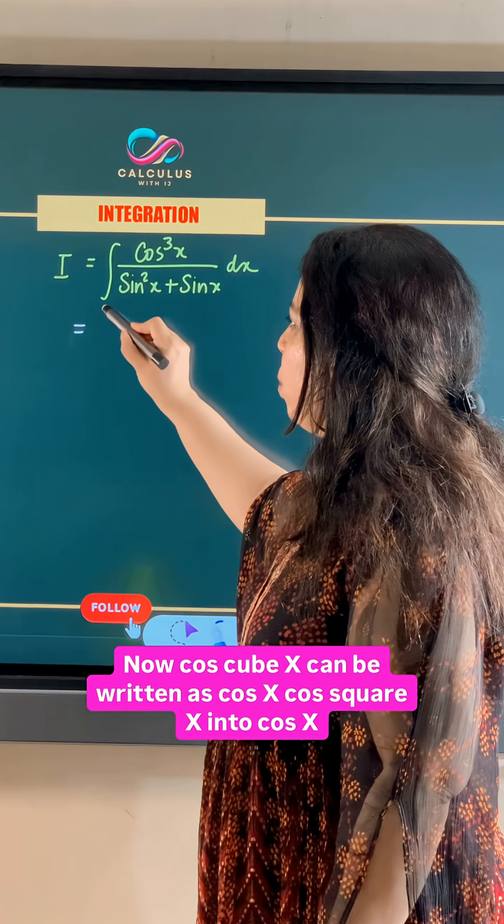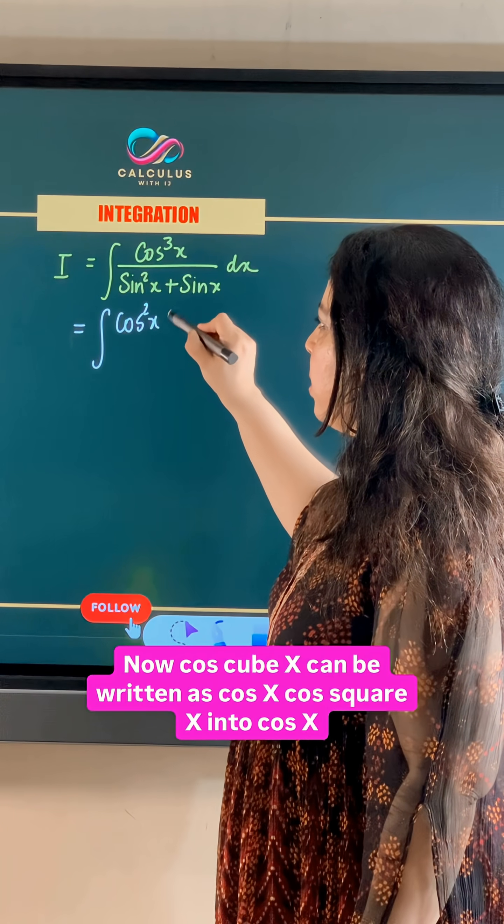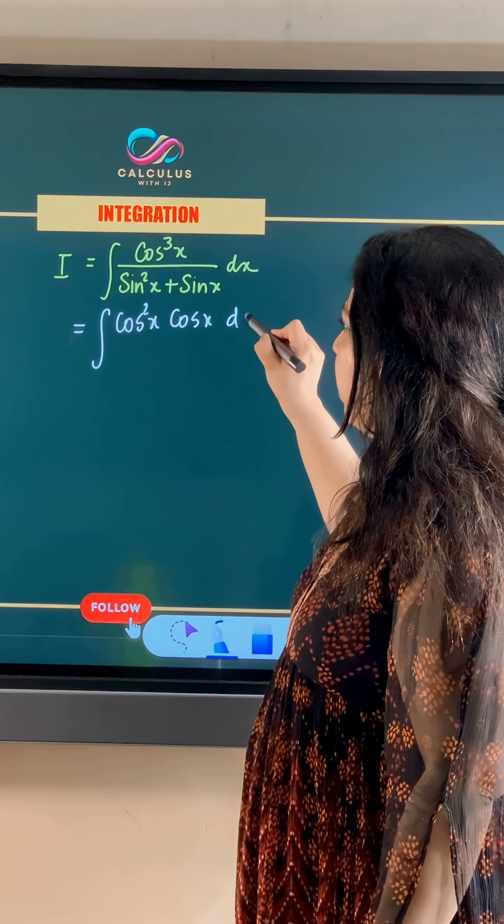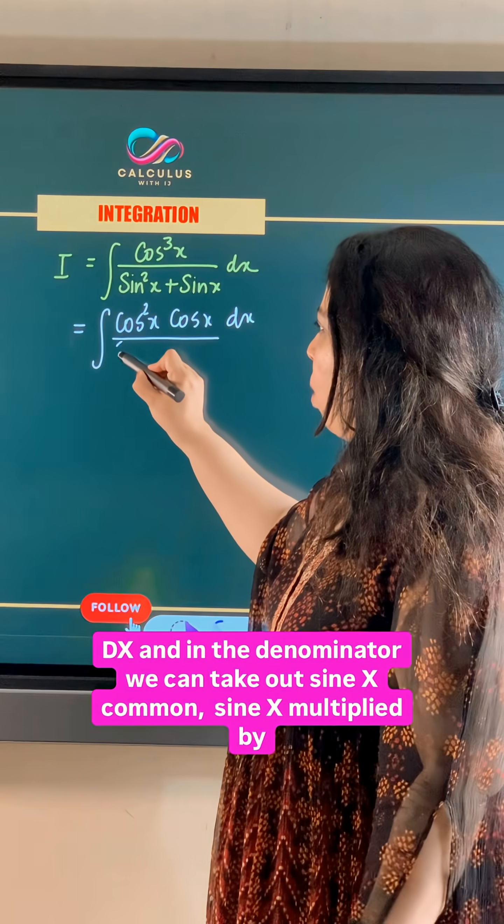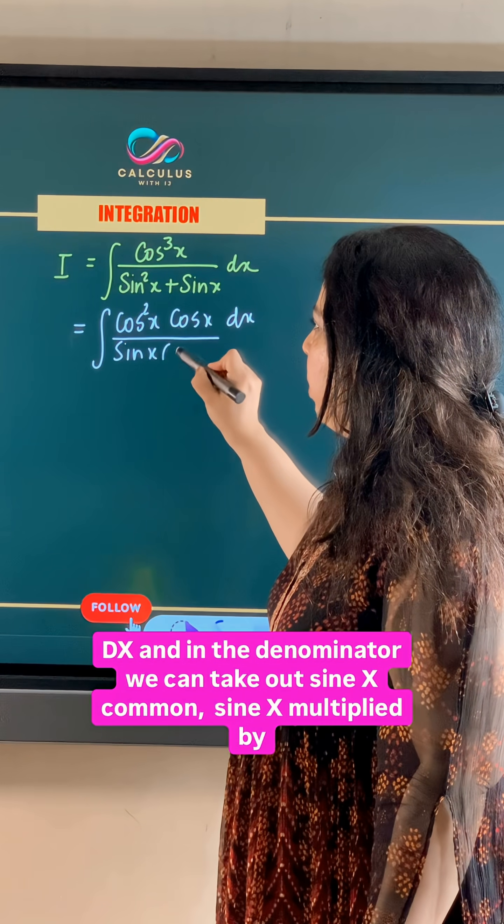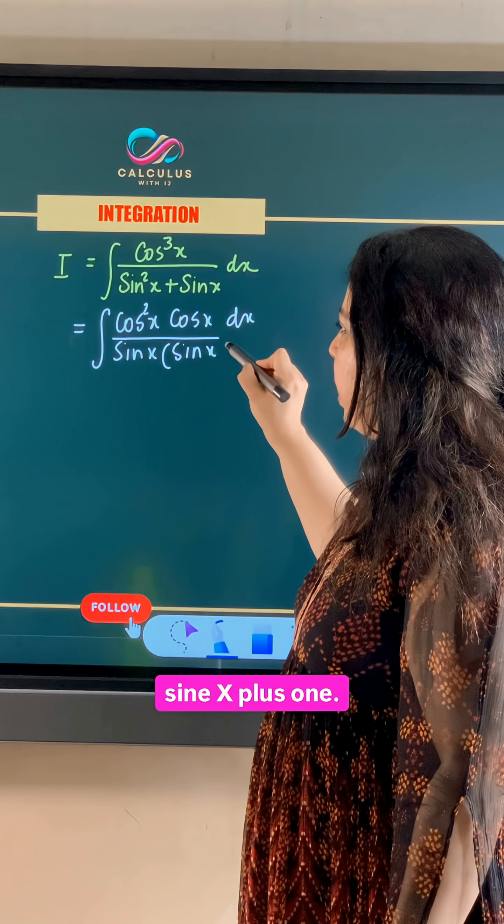Now cos cube x can be written as cos x cos square x into cos x dx, and in the denominator we can take out sin x common: sin x multiplied by sin x plus 1.